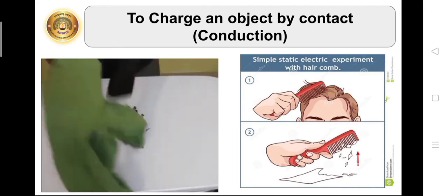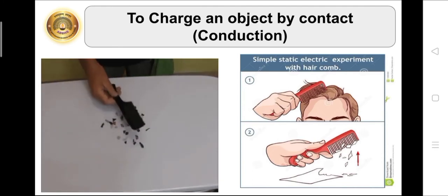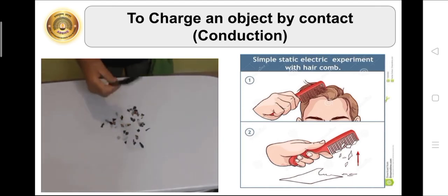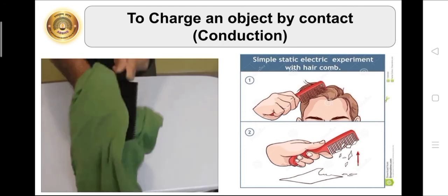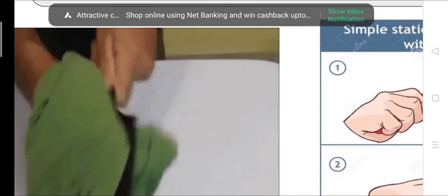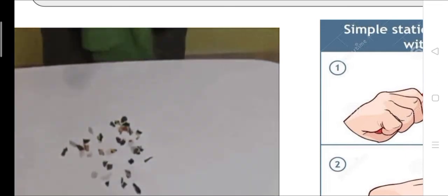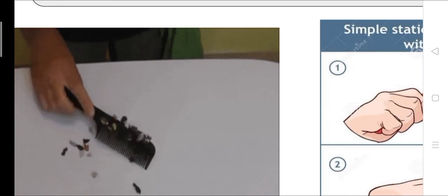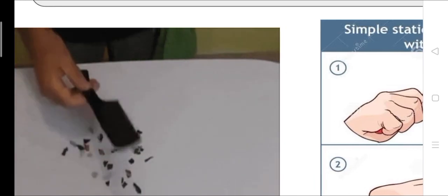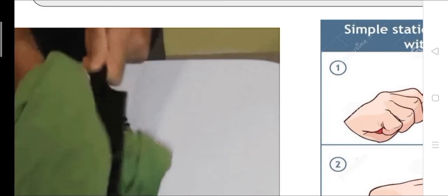So now let's see how to charge an object by contact or conduction. Rub a plastic comb against paper or your dry hair in dry weather. The comb gets positively charged due to imbalance of charges and this creates static electricity which then attracts pieces of paper as you can see here. The comb is positively charged when it is rubbed and after being positively charged it attracts pieces of paper. You can charge the comb by rubbing against your hair also.